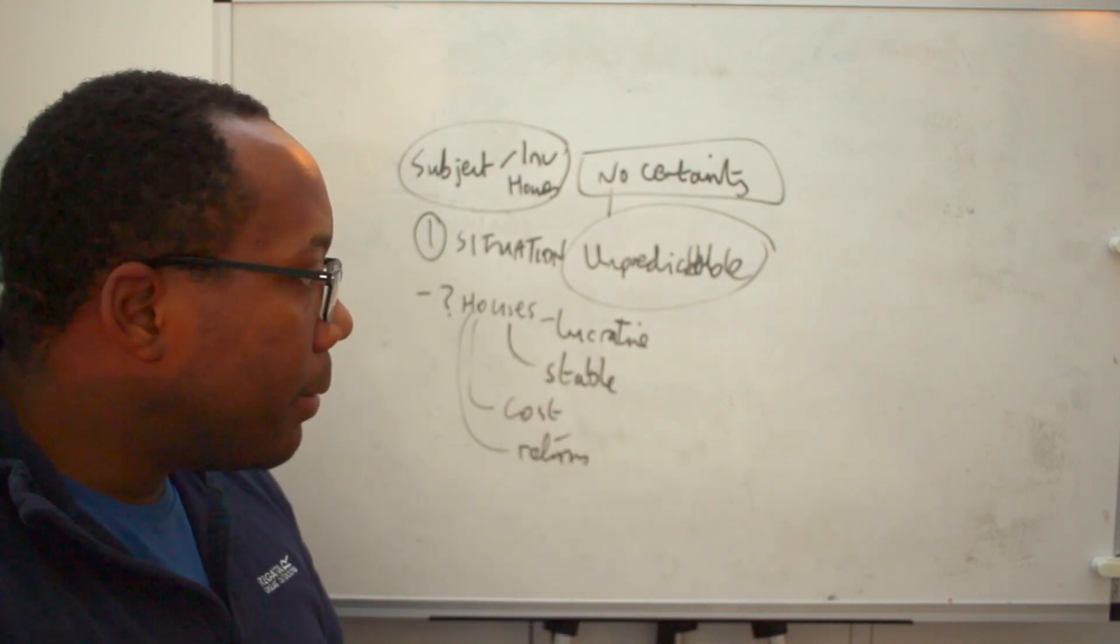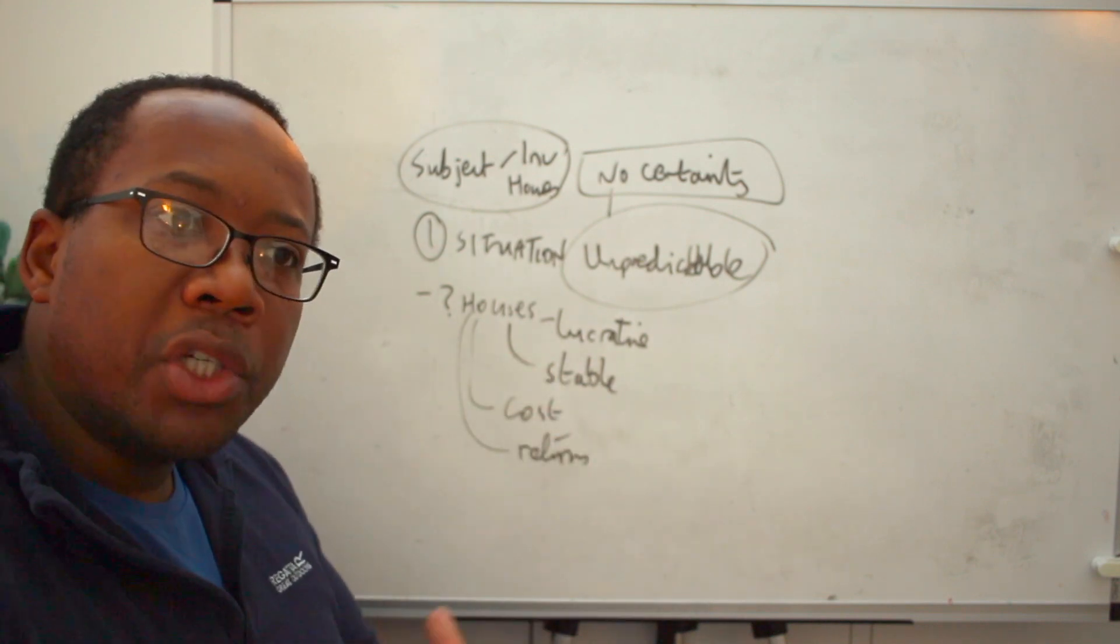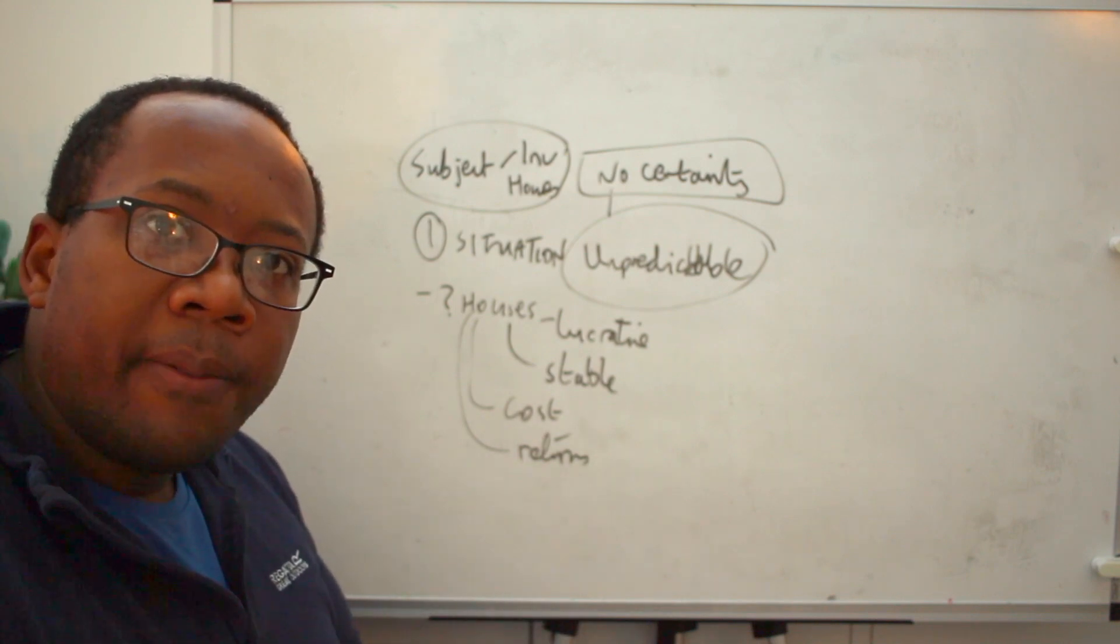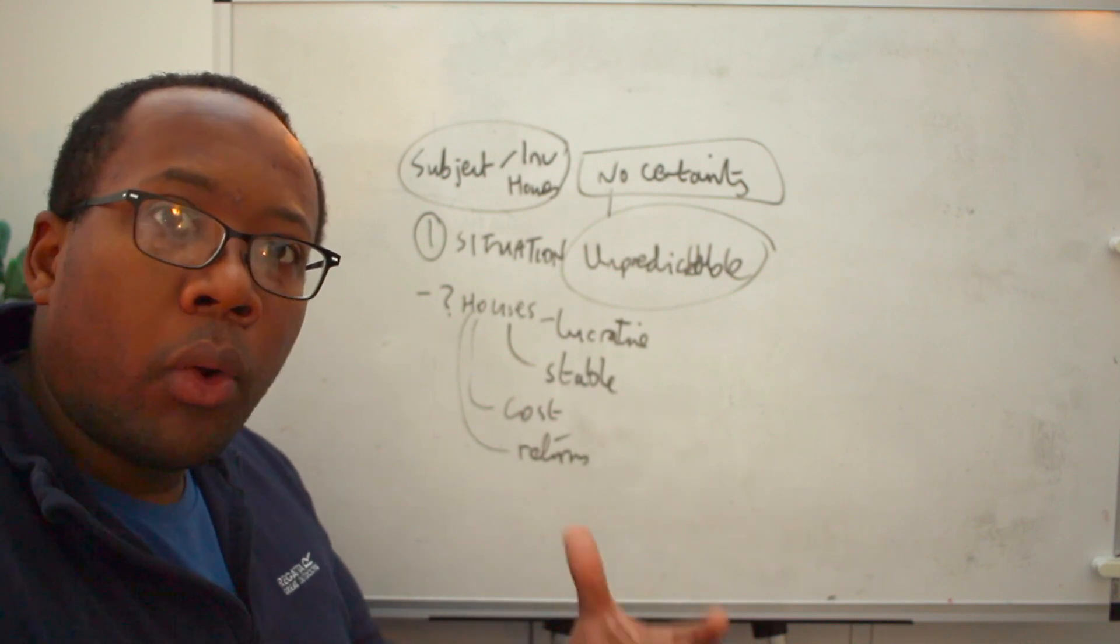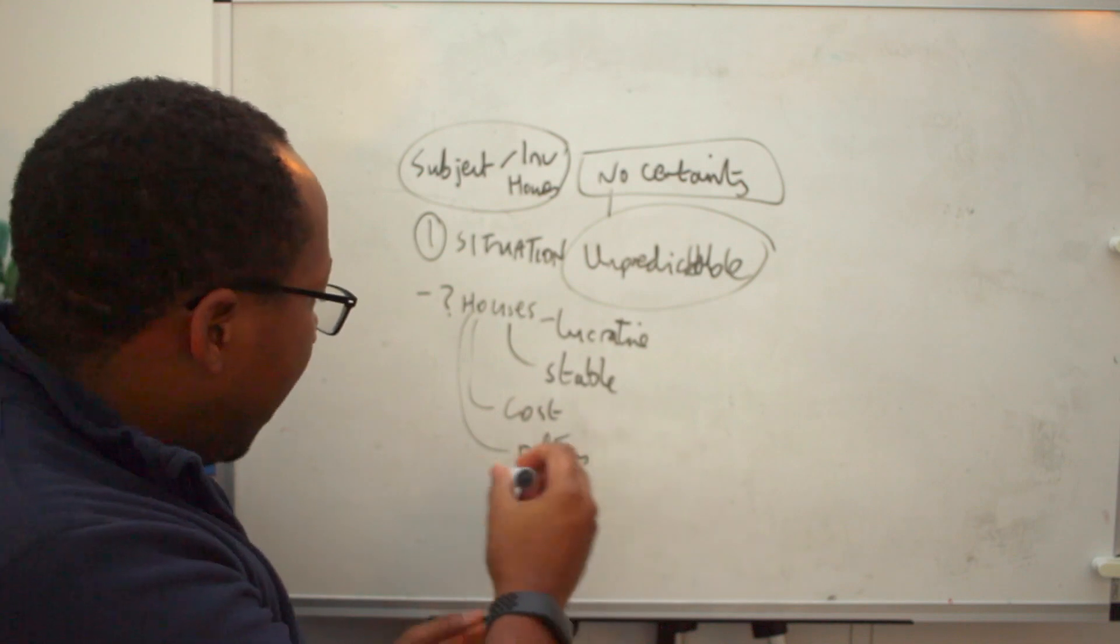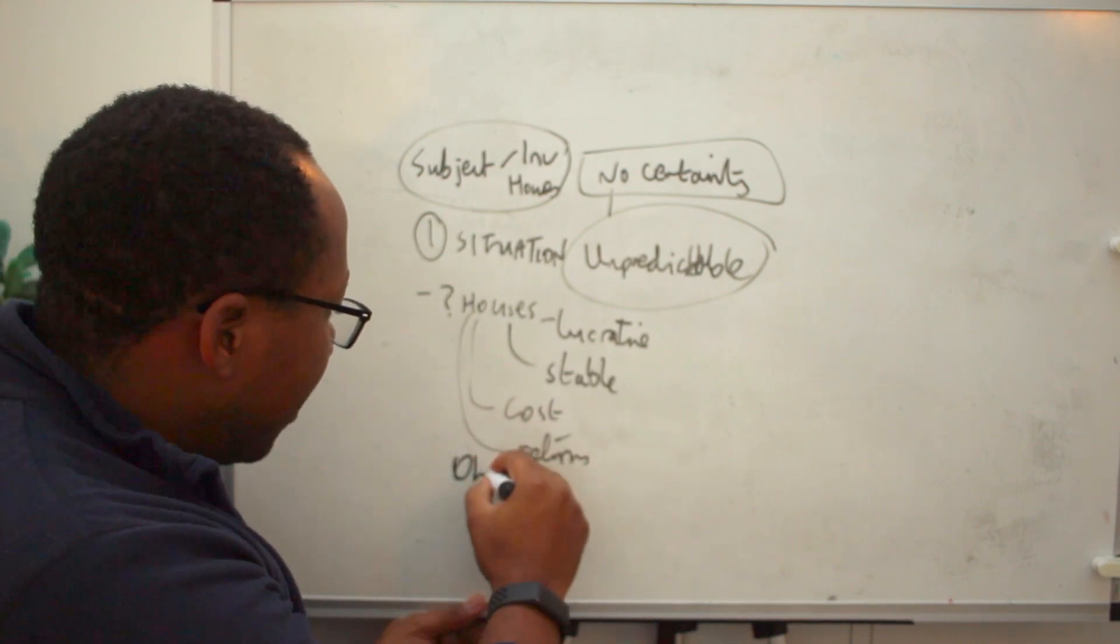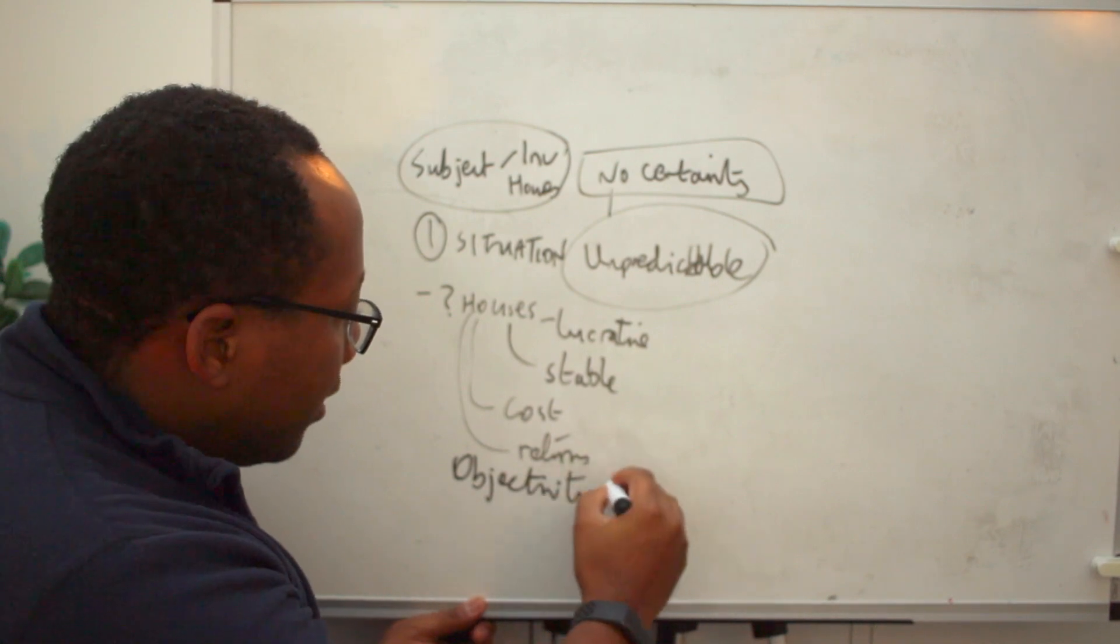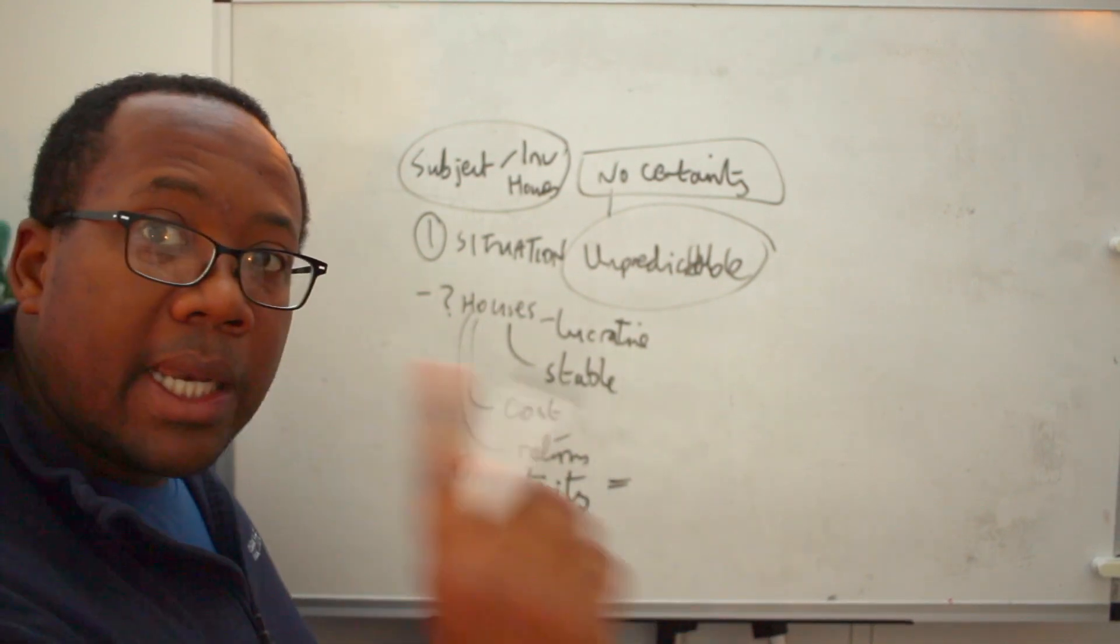And now you can apply the same thing say for example you're looking for a job. You'll have question marks about the job market, about your current skill set, about the general nature of the employer you're looking at, whatever it is. When you bring in objectivity, objectivity equals less worrying.